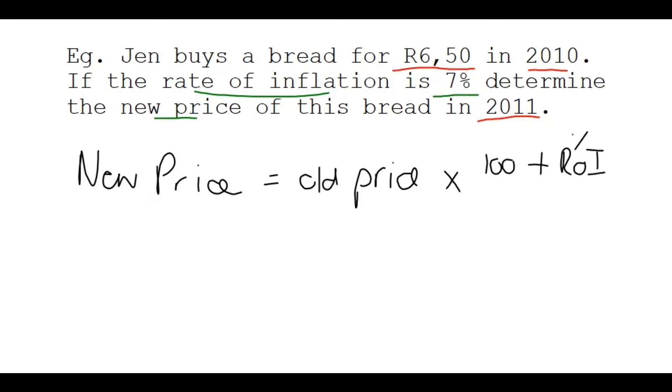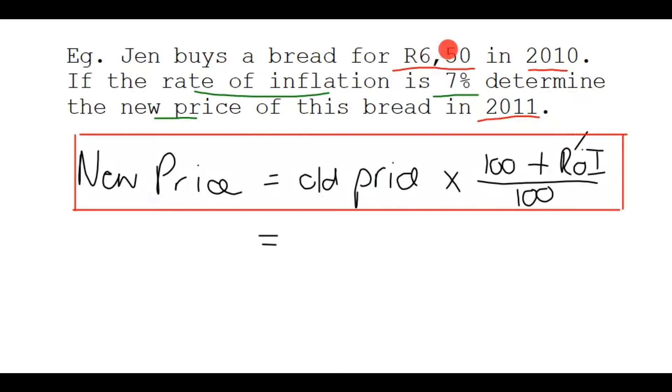There's your formula. You must really remember this. Now let's substitute. The old price, that's what we started with, that was 2010, R6.50. I multiply that by 100 plus rate of inflation. Note that I'm going to say 7 but not 7%. In this case I'm just going to use the 7, just the number.